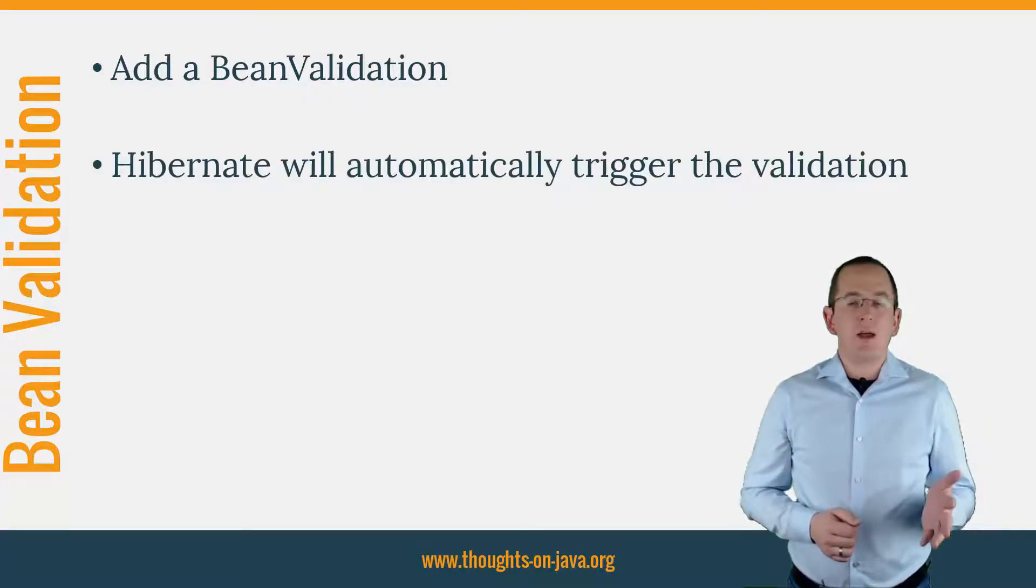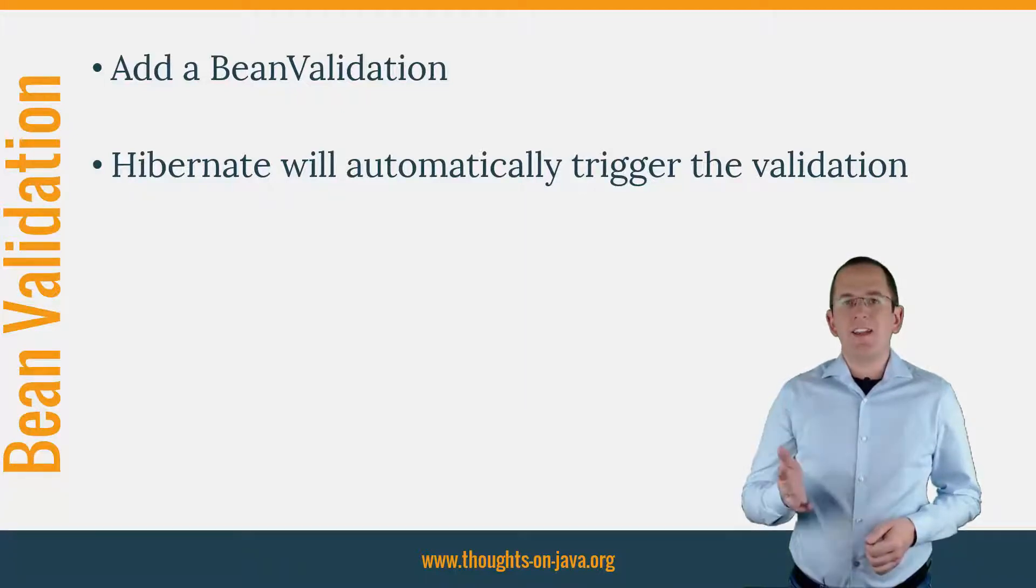If you add the HibernateValidator project to your classpath, Hibernate will automatically trigger the validation before it persists or updates the entity. So, you can use it to automatically check that only one of the associations is set on your entity. Let's take a look at the code.